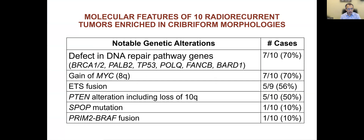Looking at the molecular characteristics of the sequenced tumors, one very interesting observation was a significant proportion of cases showing defective DNA repair pathway genes, including mutations in BRCA1, BRCA2, PALB2, TP53, PALQ, PAN, CB, and BARD1. Overall, one or more of these gene mutations were seen in 7 samples — a frequency of 70% — and all these mutations were somatic in nature.